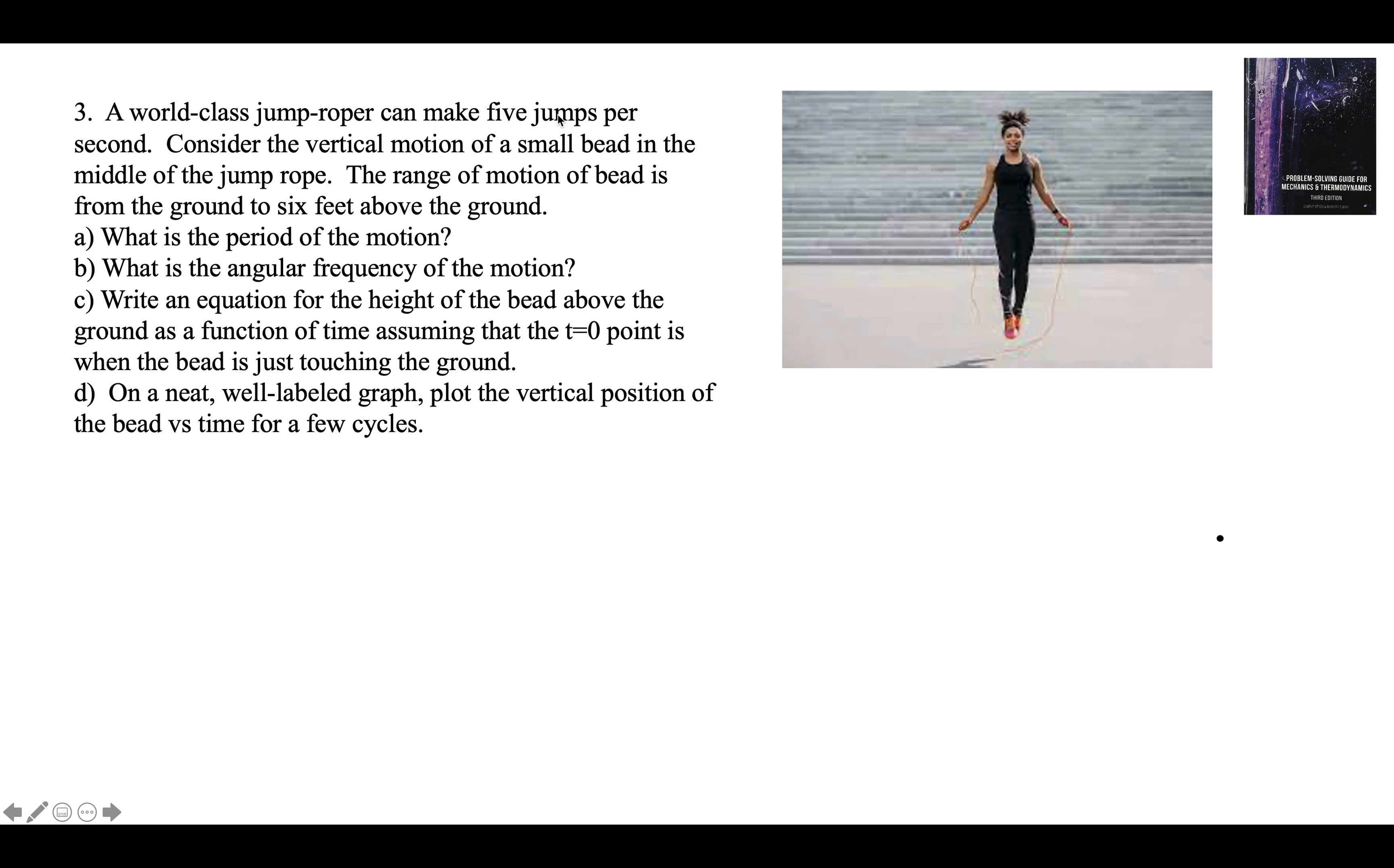Really good jump ropers can make five jumps per second. So consider the vertical motion of a small bead in the middle of the jump rope. The bead's going head, feet, head, feet, head, feet over the top. The range of motion of the bead is from the ground to six feet above the ground.